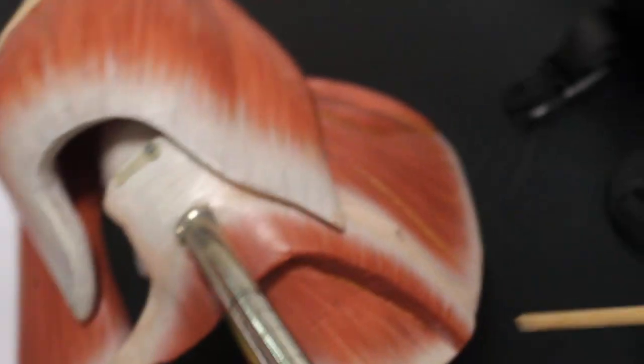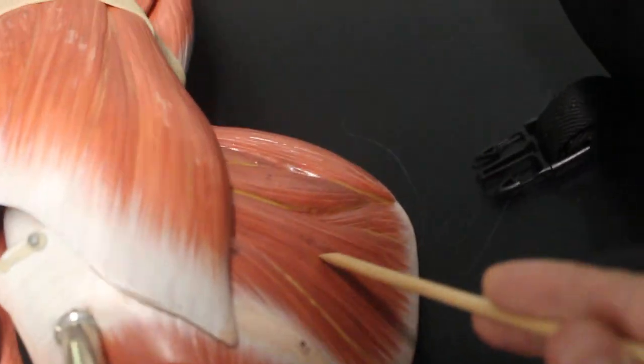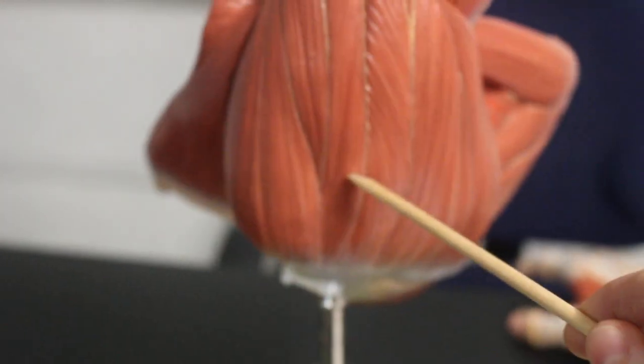Come around to the scapula, here's infraspinatus, here's the deltoid muscle. So let's go over to this side, here is the deltoid muscle.